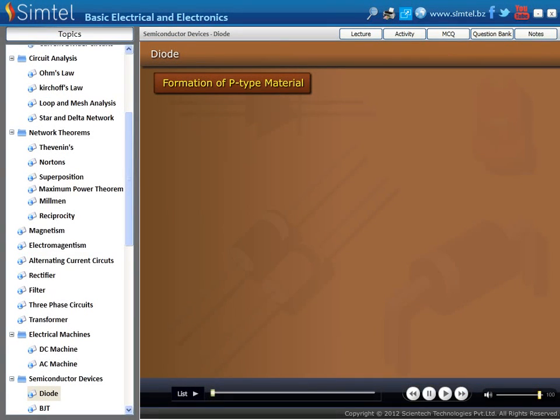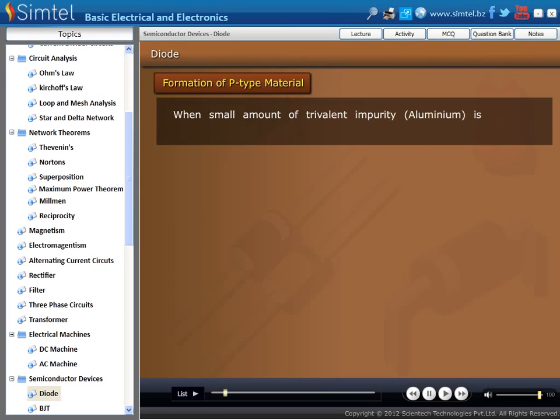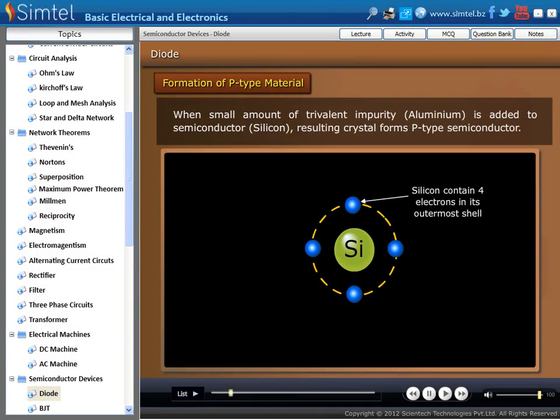Now we explain the formation of P- and N-type material. First we see formation of P-type material. When small amount of trivalent impurity, such as aluminium, is added to semiconductor like silicon,